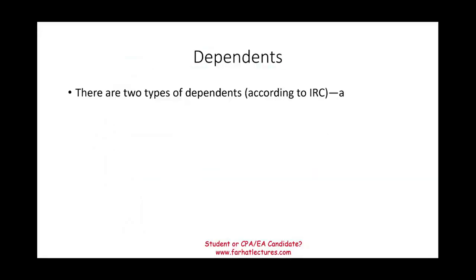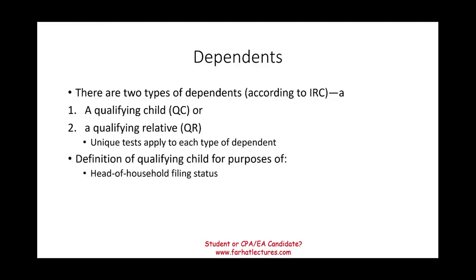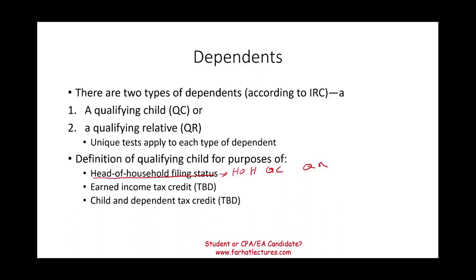There are two types of dependents: qualifying child or qualifying relative, and unique tests apply to each. It's important because for the head of household filing status you need to know whether the dependent is a qualifying child or qualifying relative. We're also going to use these terms later when we discuss earned income tax credit, child and dependent tax credit, and credit for child and dependent care expenses.